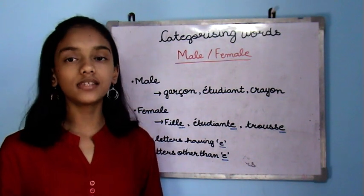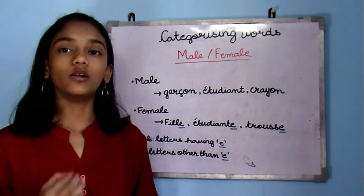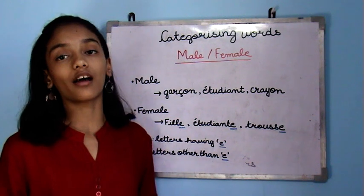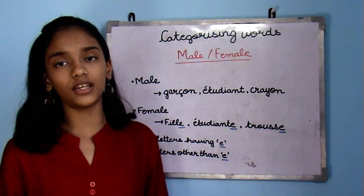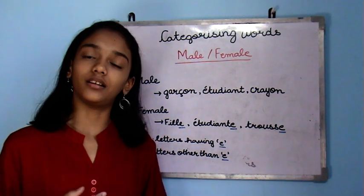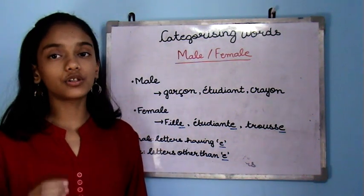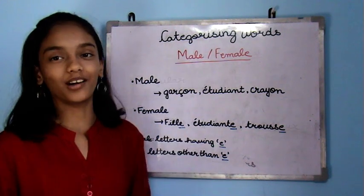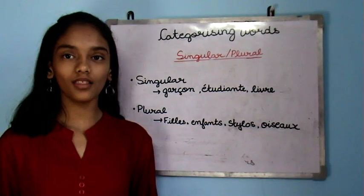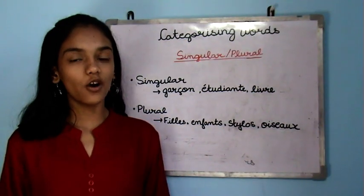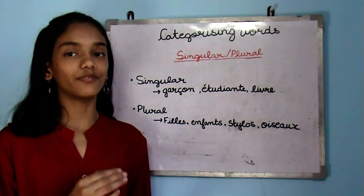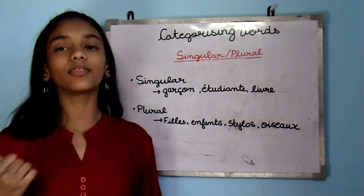Another way to identify these words is by looking at the articles, like the definite article. If you want to learn about them, please click on the link above. Now we are going to learn how to identify singular and plural words.